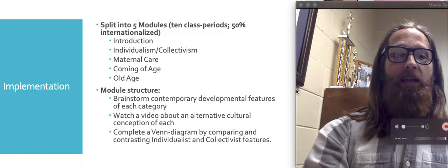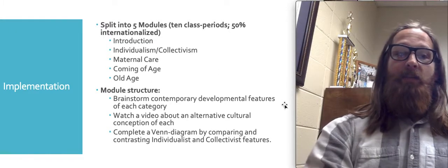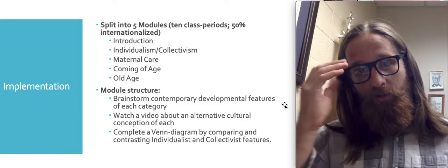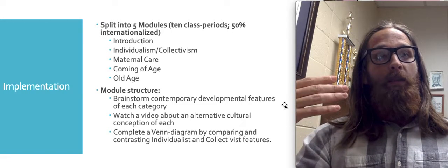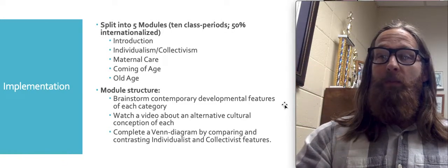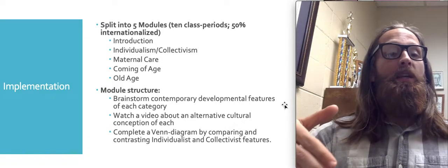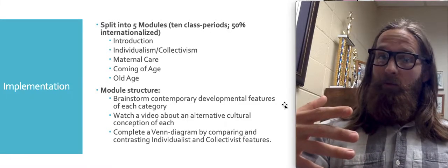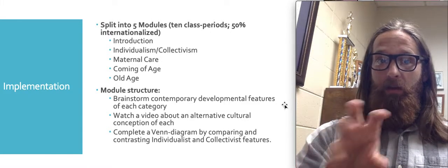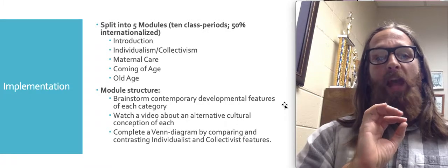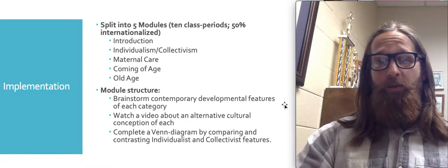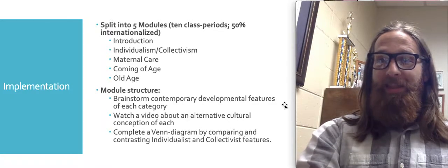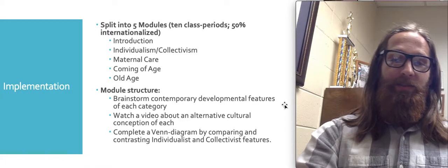Each module is divided into three main components. The first is a brainstorm component, where students reflect on what counts as, say, maternal care in developmental psychology — what's important, who defines what's important. Then they're exposed to a collectivistic approach to the same topic: maternal care, coming of age, or old age. Finally, they do a Venn diagram comparing and contrasting individualism and collectivism, recognizing that there's more than one thing that counts as important in each of these transitions.